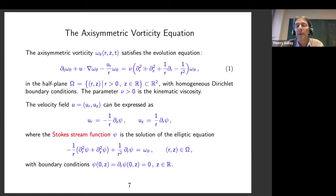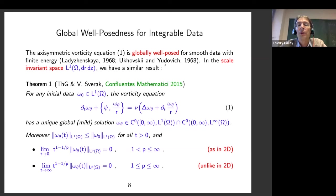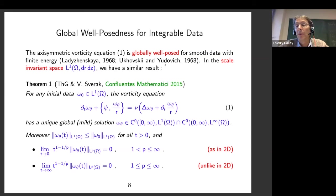Now we want to study particular solutions of that equation. The Cauchy problem for the axisymmetric vorticity equation is globally well posed in the large. This is a famous result from the Russian school of the 1960s — there is a paper by Ladyzhenskaya in 1968 and another by Ukhovskii and Yudovich the same year — where they prove that for finite energy sufficiently smooth initial data you have a unique global solution, exactly as in the 2D case.